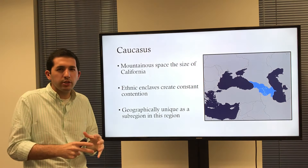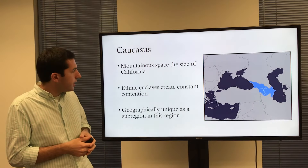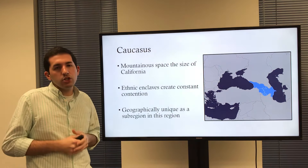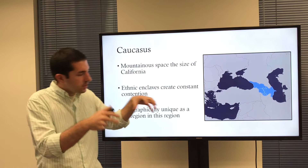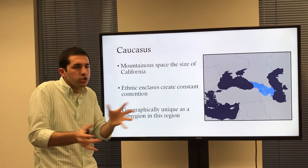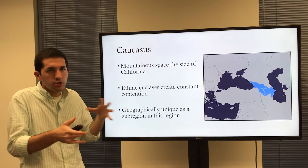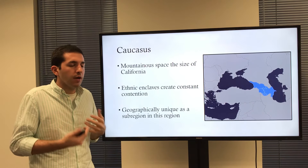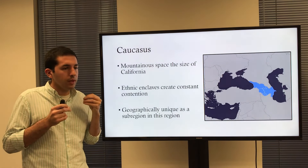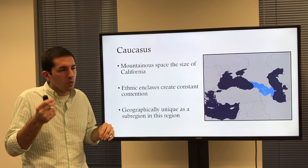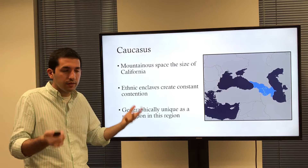The Caucasus region, nestled in the Mediterranean climate between the Black and Caspian Seas, is about the size of California geographically speaking. Ethnic enclaves create constant contention in the region — Abkhazia, South Ossetia, and Chechnya on the border of this larger region. It's geographically unique as a sub-region because of those geographic and climatic features. Living off that Mediterranean lifestyle gives it a slightly higher life expectancy than the rest of Russia — a geographic outlier producing figs, nuts, and things quite different from what we imagine when we see pictures of the taiga, the tundra, and Siberia.